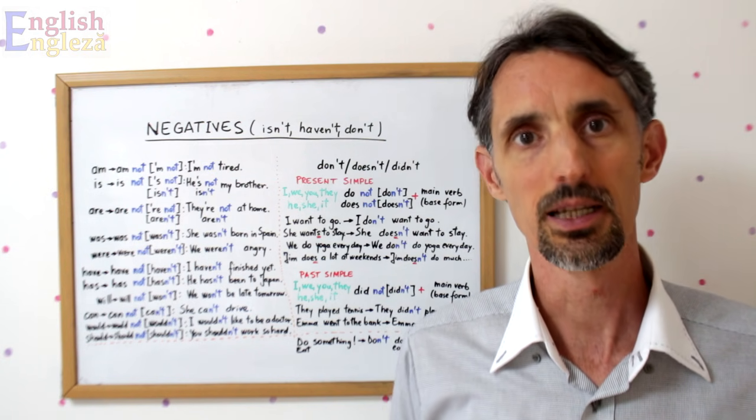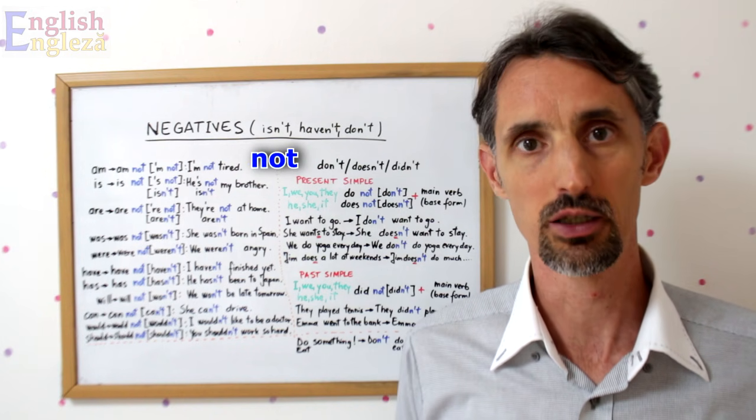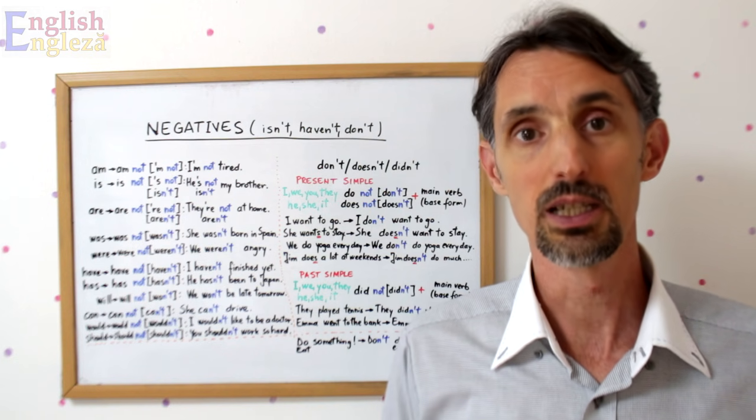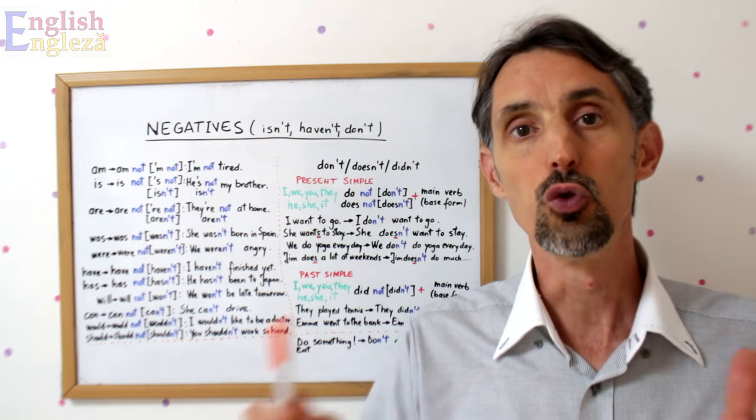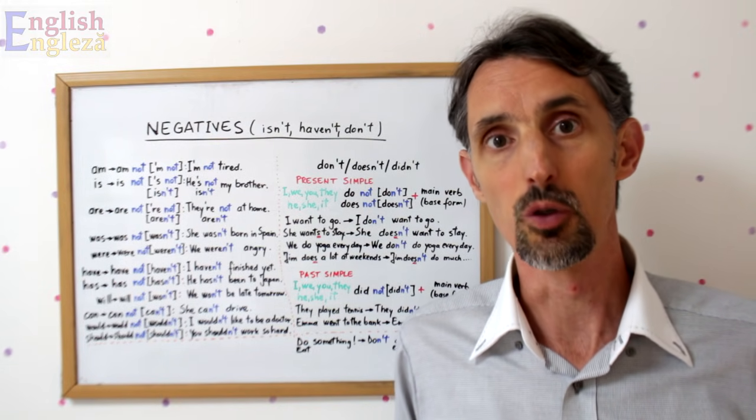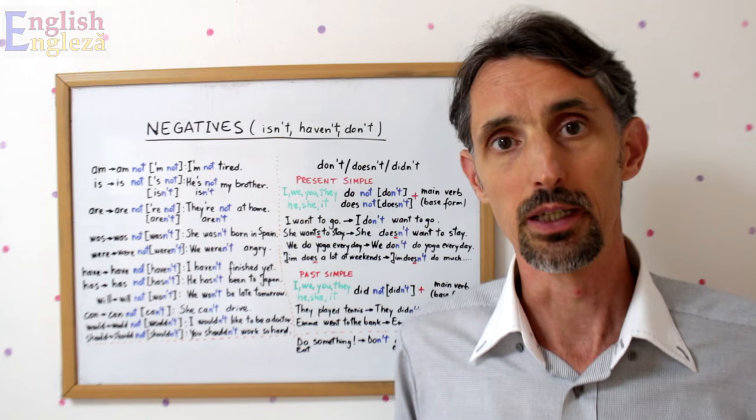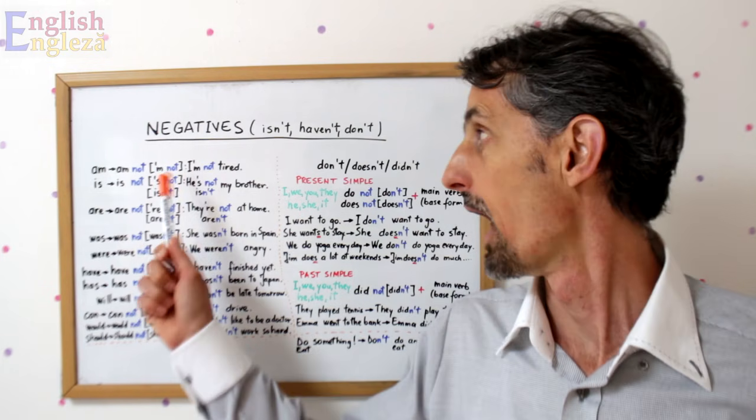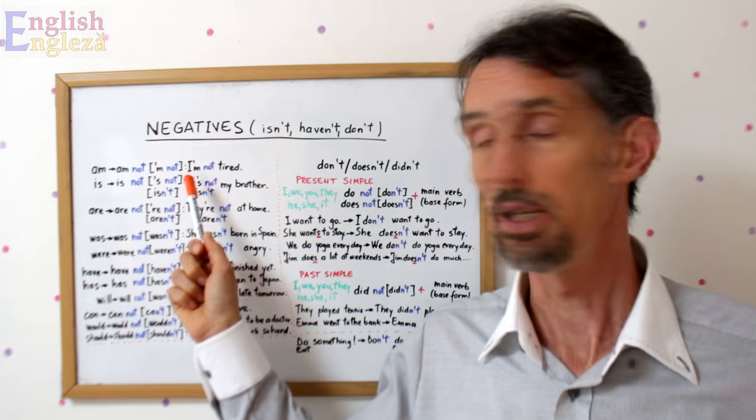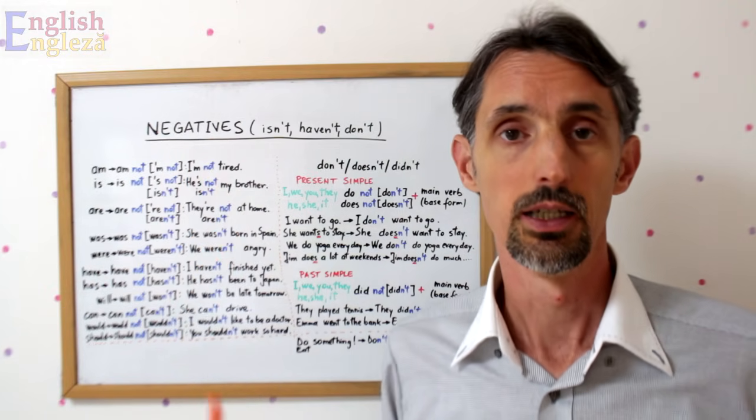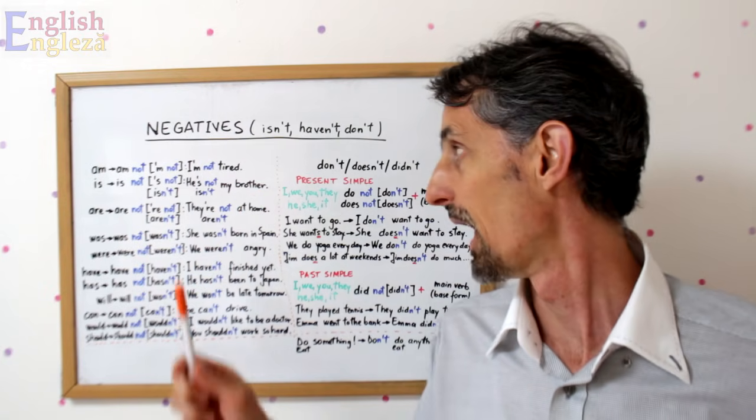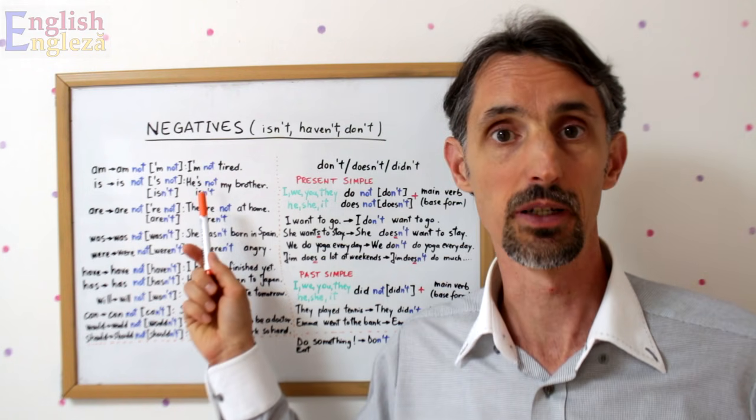Lucrurile sunt destul de clare și simple. Pentru a forma negațiile se adaugă verbelor pur și simplu negația NOT, oarecum echivalenta românescului NU. Spre deosebire de NU din română, negația NOT se adaugă după verb și NU înaintea lui. De exemplu, o propoziție precum EU SUNT OBOSIT, I'M TIRED, poate deveni EU NU SUNT OBOSIT, I'M NOT TIRED. Deci verbul lui AM, verbul AFI, i s-a adăugat negația NOT.